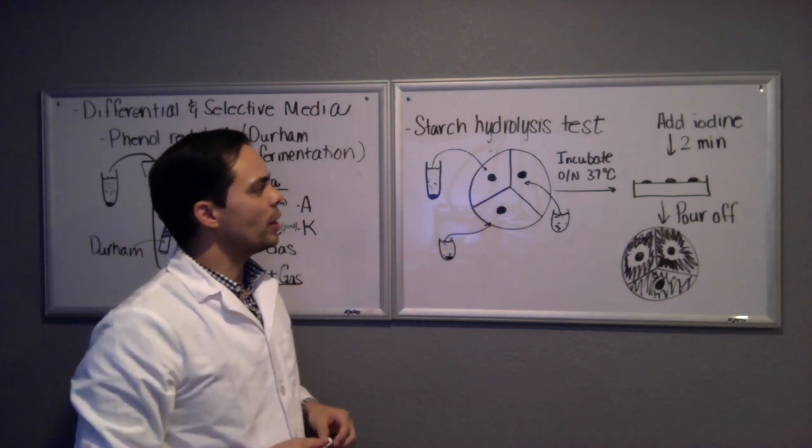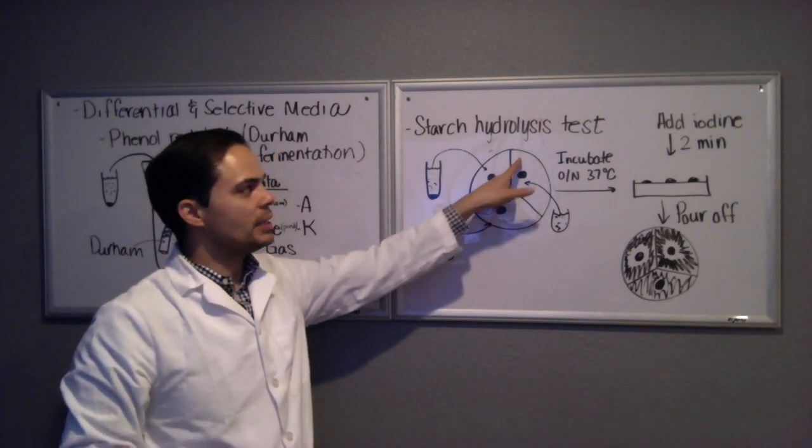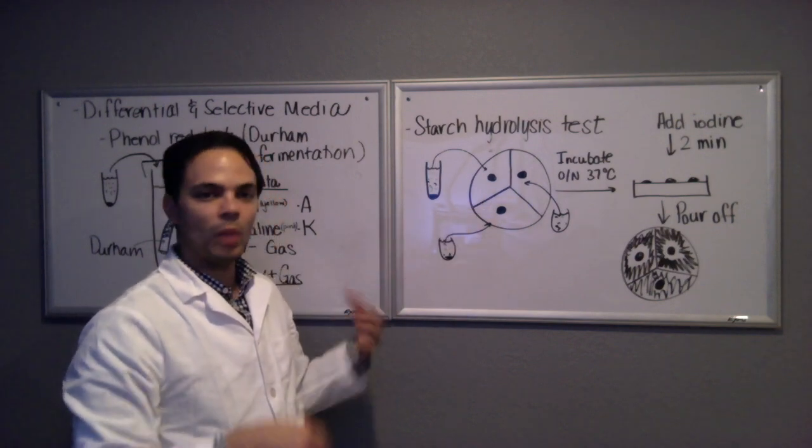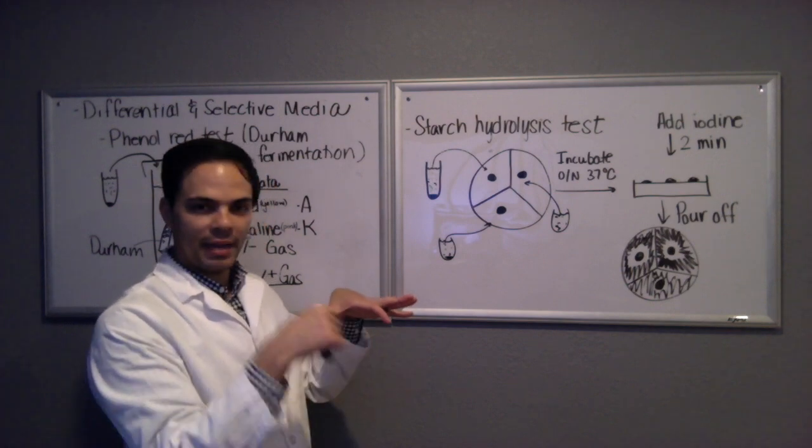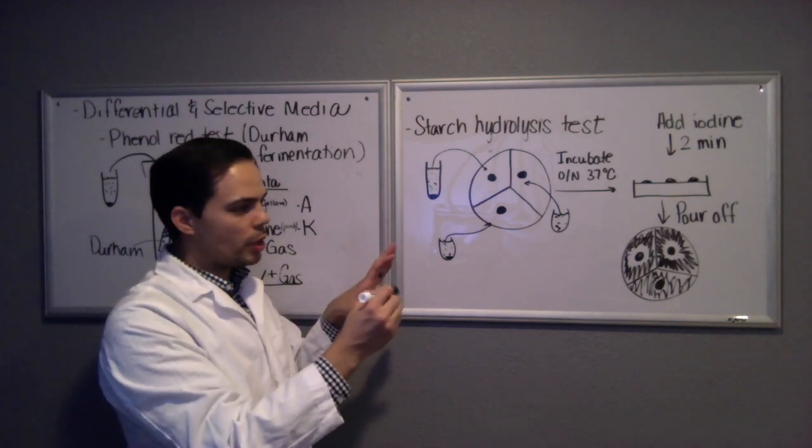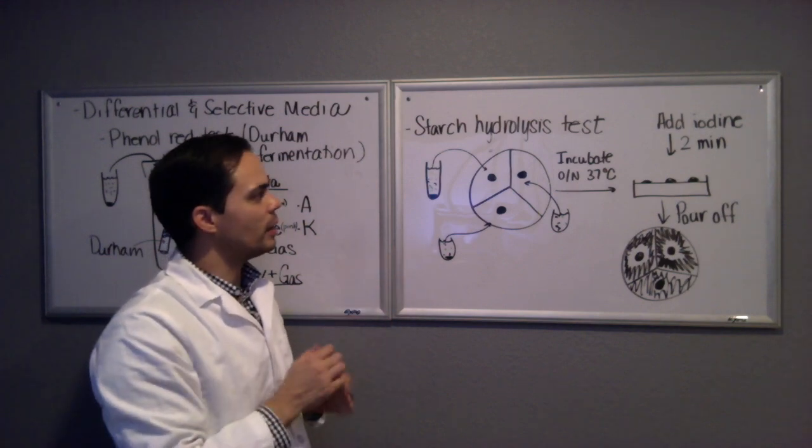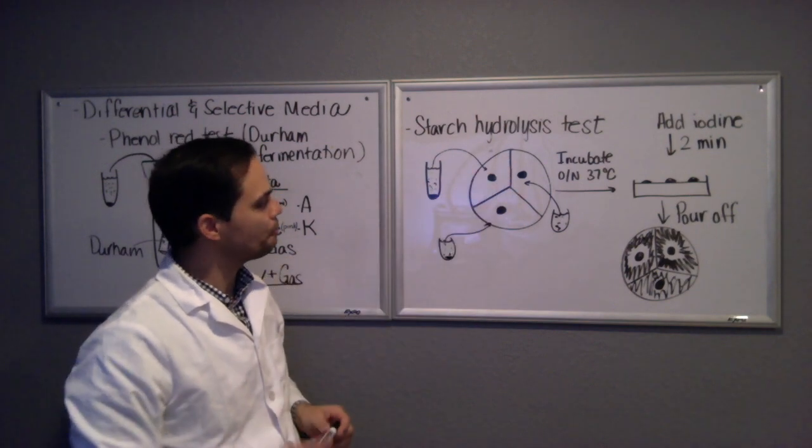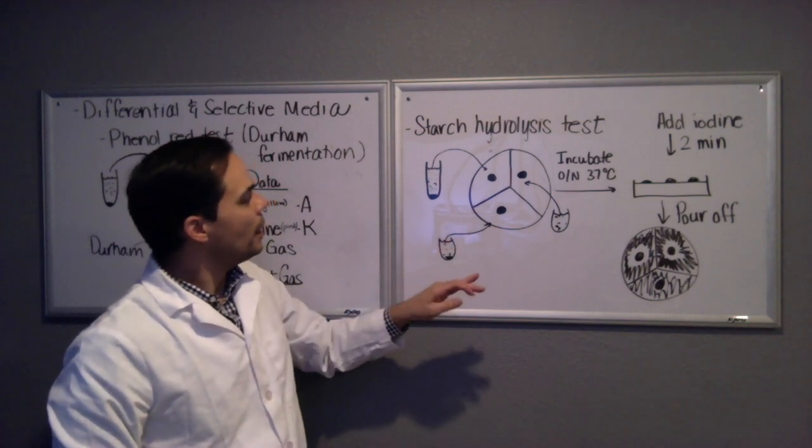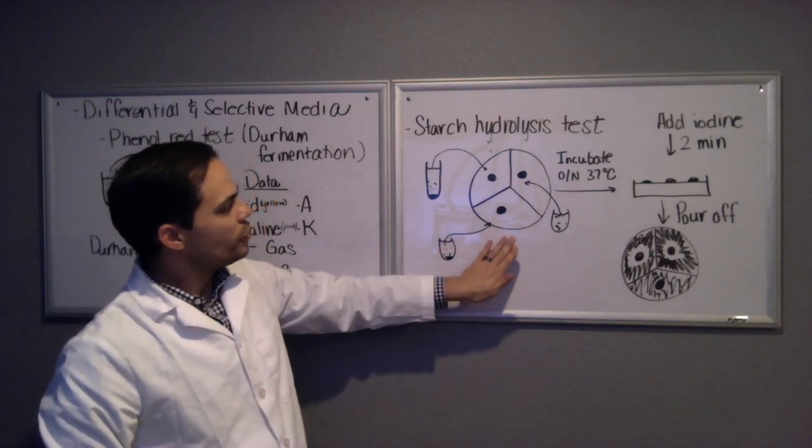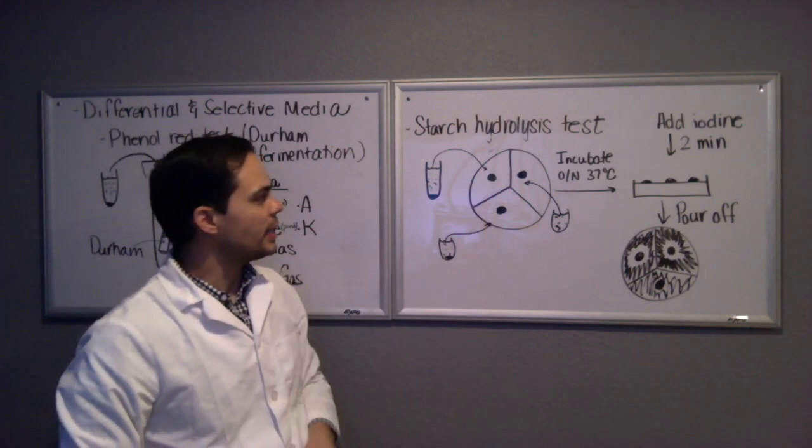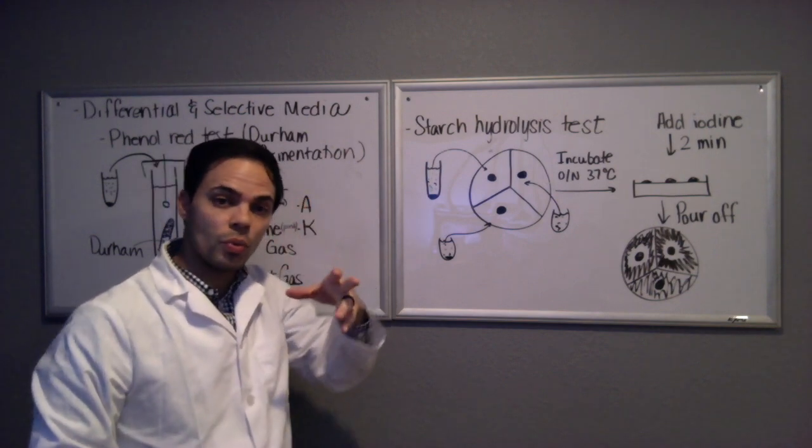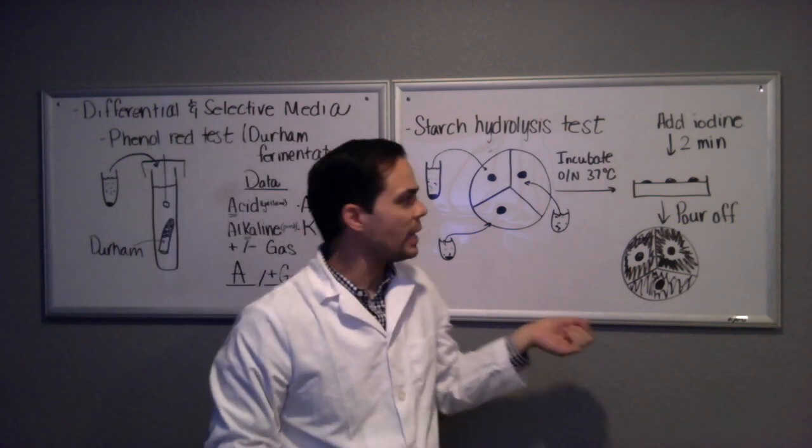You want to make sure that you label this plate on the base as always. What you're labeling is your name, the date, the name of the bacteria in each of the three parts of the plate. Once you've labeled the bottom and you've inoculated it, what you want to do is incubate it overnight at 37 degrees Celsius. It may take a little longer than that if you have some slow growers, maybe 48 hours at 37 degrees Celsius.